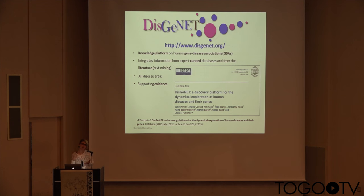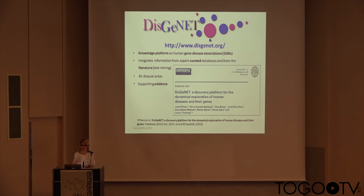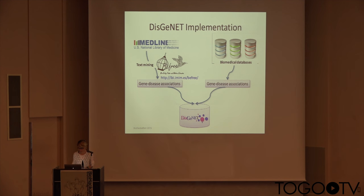We need a resource that gathers, integrates, and provides analysis tools to get information. I want to present Genet, a knowledge platform for human gene-disease associations that integrates information from literature and from biomedical databases. We aim to cover all disease areas, giving emphasis to very well granulated evidence and the provenance of the associations. We extract, by text mining, gene-disease associations from the literature with the B3 system, a text mining system developed in our group.